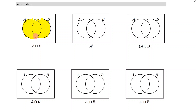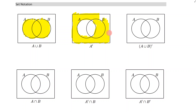The next one we have is the complement of A, which means everything that is not in A. So we're just going to highlight everything that is not A. That's the complement of A, and it's going to look something like this.